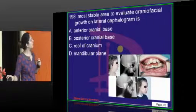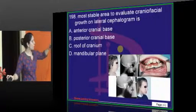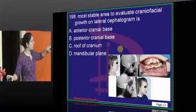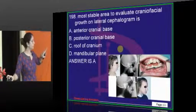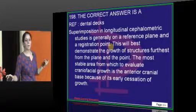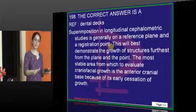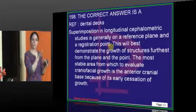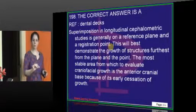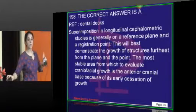The most stable area to evaluate craniofacial growth on a lateral ceph is the anterior cranial base — sella to nasion. The roof of the cranium has no landmarks, the mandibular plane has resorption and deposition occurring, so the anterior cranial base is least affected by treatment. This area can be used as a registration or reference plane for superimposing lateral cephs taken before and after treatment to evaluate changes in the maxilla, mandible, and teeth.